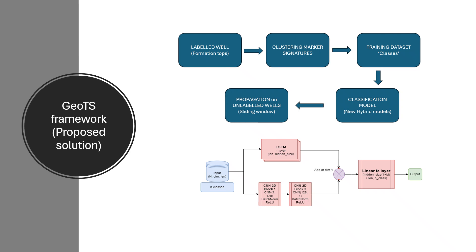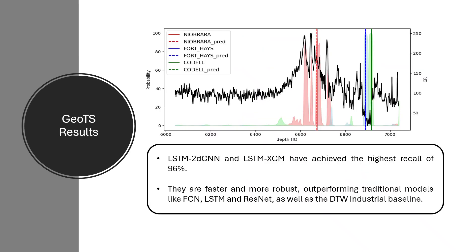To improve performance, new hybrid models combining LSTM and 2D-CNN blocks were introduced. The new hybrid models of LSTM-2D-CNN and LSTM-XCM have achieved higher recall, are faster and more robust, outperforming traditional classification models as well as the DTW baseline.